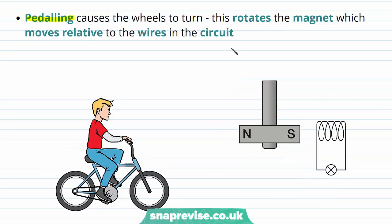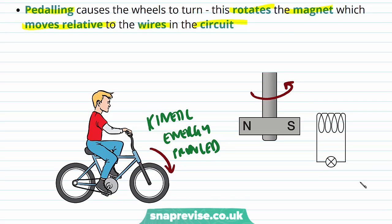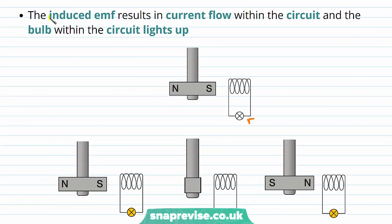Pedaling the bicycle causes the wheels to turn. This rotates the magnet which moves relative to the wires in the circuit. Kinetic energy is produced by turning the wheel, and this in turn will rotate the magnet. The induced EMF results in current flow within the circuit and the bulb within the circuit lights up.